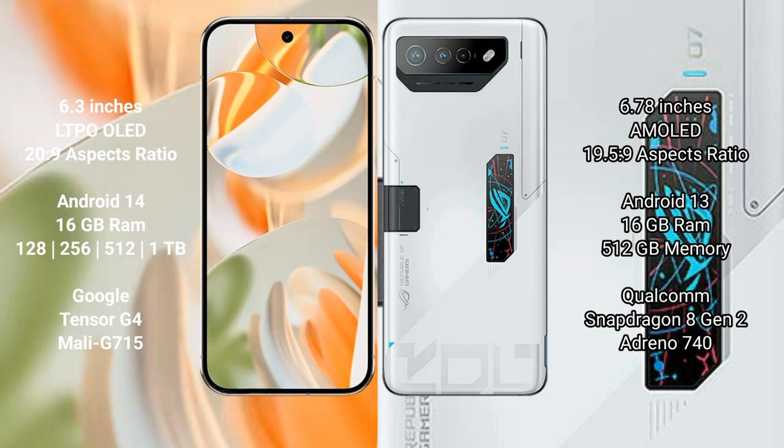The Google Pixel 9 Pro is powered by the Google Tensor G4 processor with a Mali-G715 GPU. The ASUS ROG Phone 6D Ultimate comes with 16 GB of RAM and 512 GB of internal storage, powered by the Snapdragon 8 Gen 2 processor with an Adreno 740 GPU.